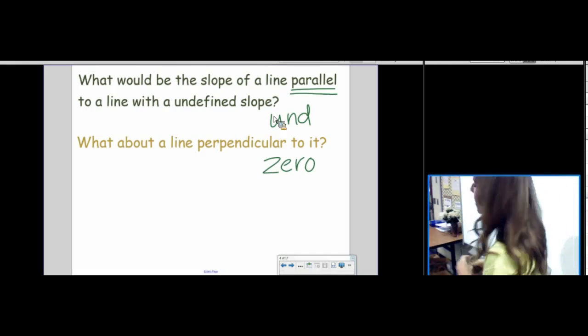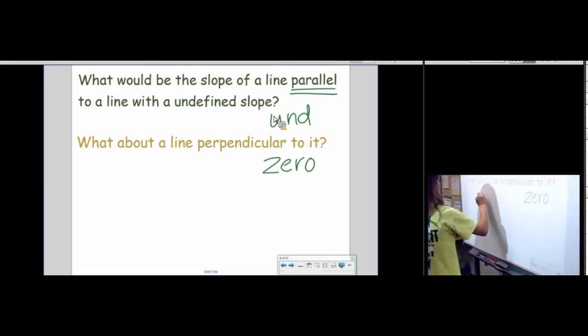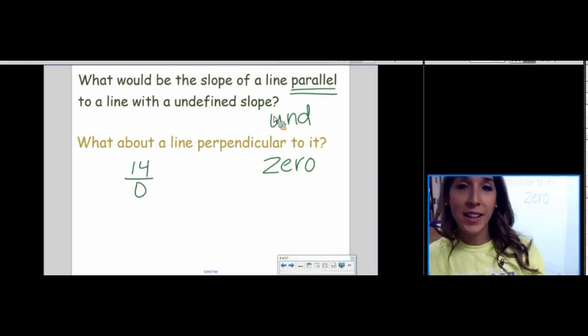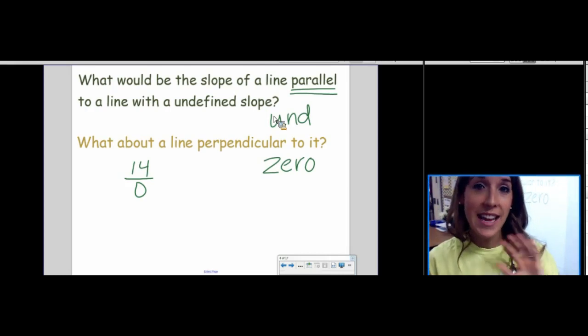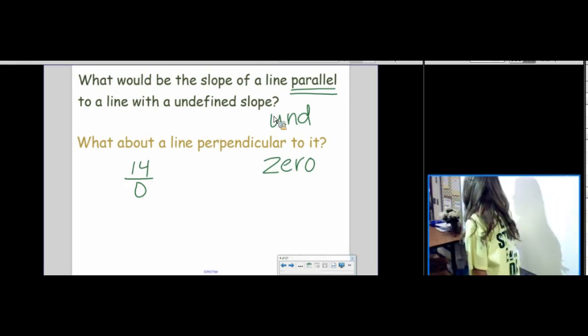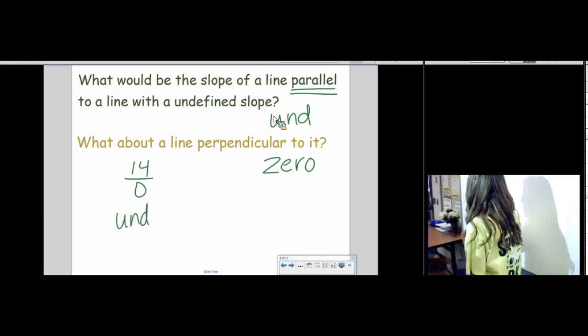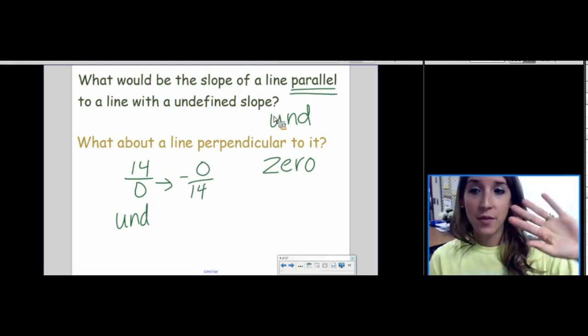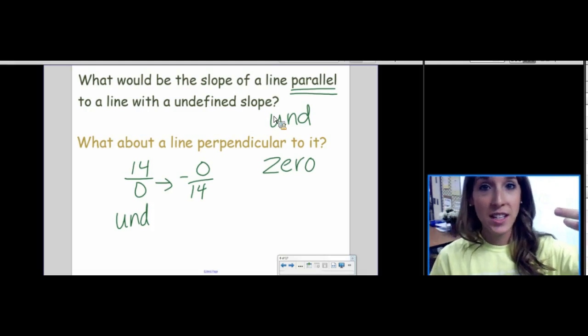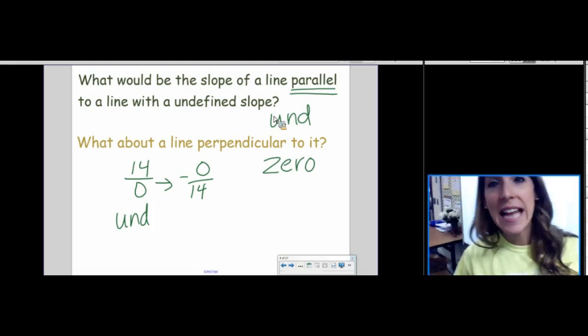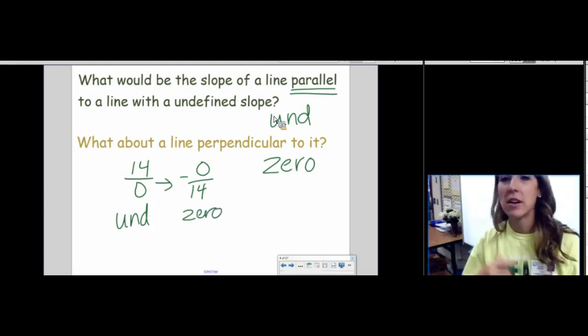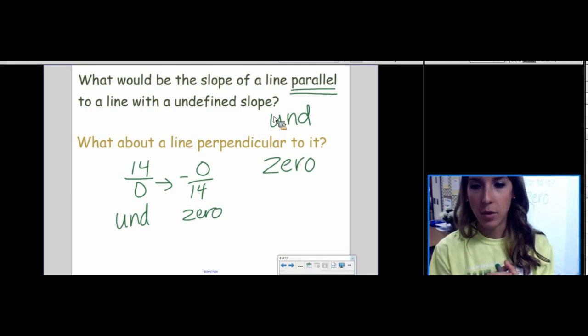A line perpendicular to a line with undefined slope would have a slope of 0. So, what we're saying is that 0 and undefined are opposite reciprocals, kind of. Think about this. Yesterday, when we were doing slope, and we got an answer that was like 14 over 0. And we talked about if you go to your calculator, that's going to give you an error. Not able to divide by 0. So, that's when our slope is undefined. But if we do the opposite reciprocal, what's 0 divided by negative 14? If we flip and switch it, I don't care what the denominator is. You will get 0. So, 0 and undefined are opposite reciprocals.